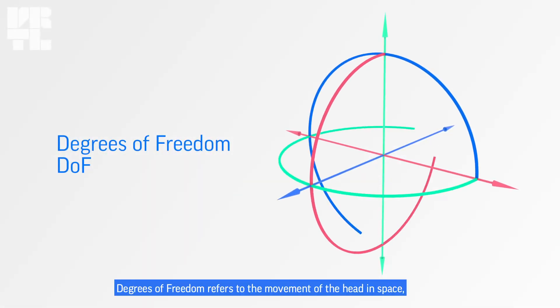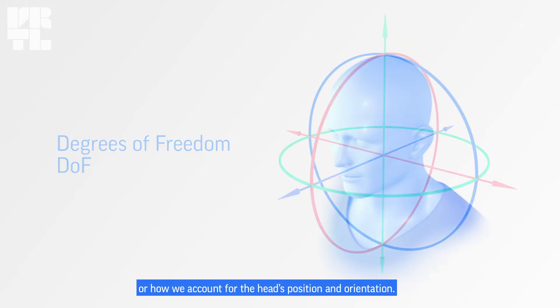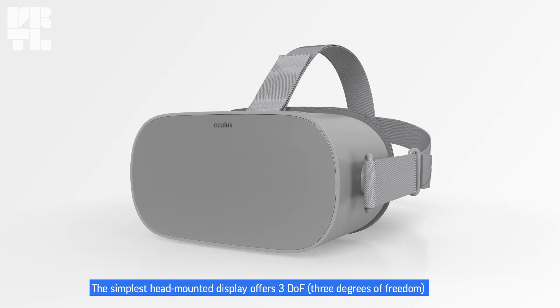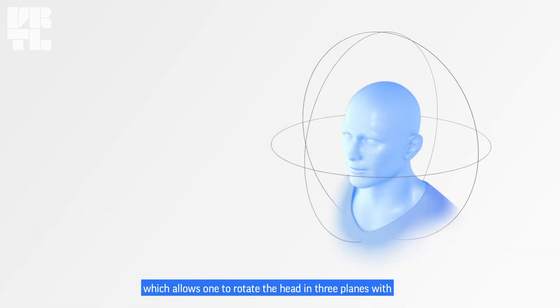Degrees of freedom refers to the movement of the head in space, or how we account for the head's position and orientation. The simplest head mounted display offers three degrees of freedom, which allows one to rotate the head in three planes.